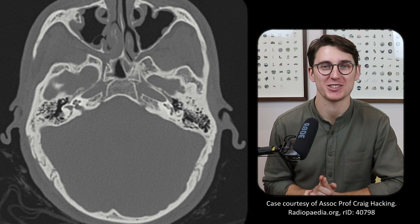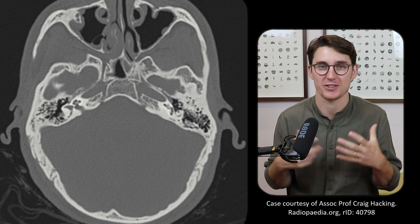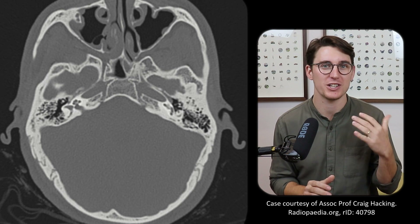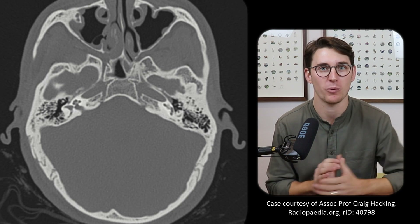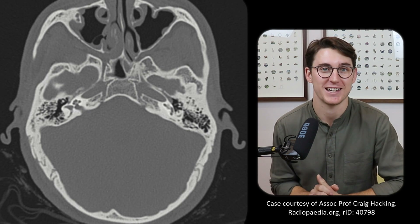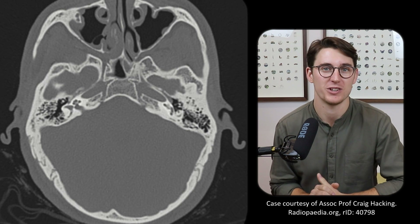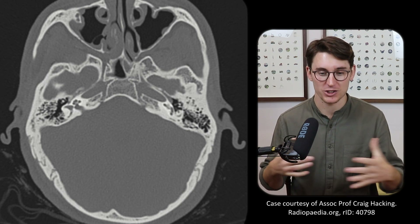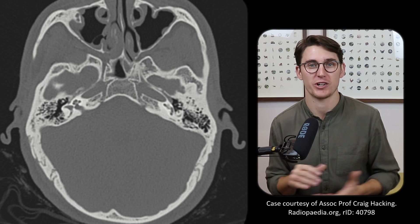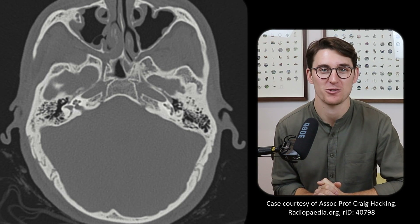Hello everybody and welcome back to another radiology tutorial. Today we're going to be discussing the skull base foramina. I know this is a topic that many people find confusing, so I'm going to go through each foramen systematically one by one, showing you exactly what they look like on a CT scan, how you can identify them, as well as mentioning the structures that pass through them. We'll follow the cranial nerves, starting from cranial nerve 1, working down to cranial nerve 12, then discussing foramina without cranial nerves.